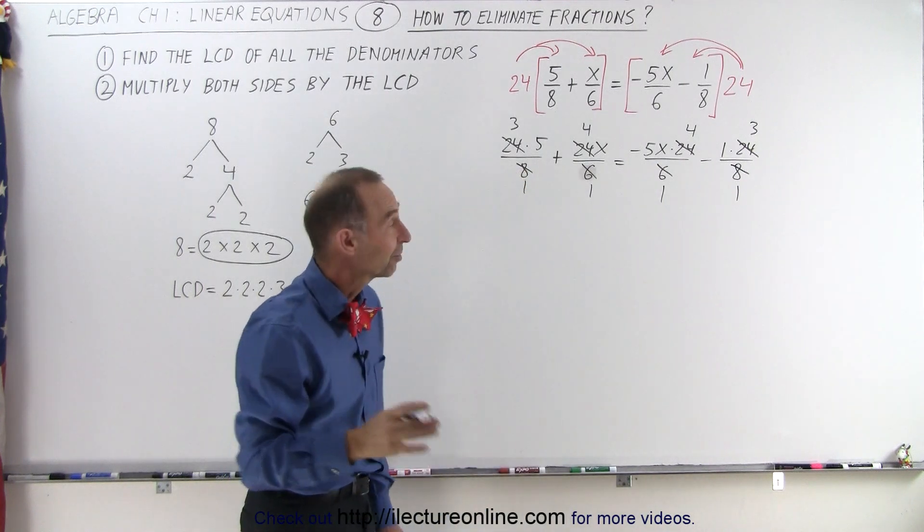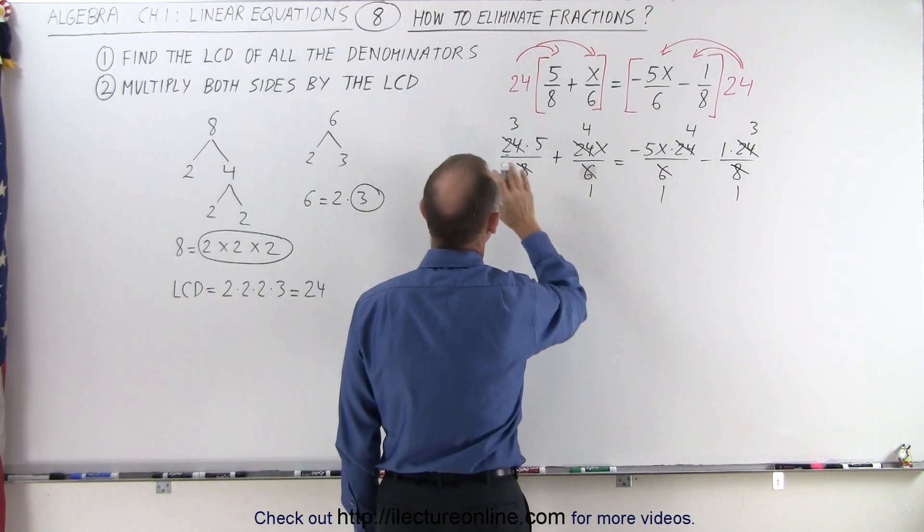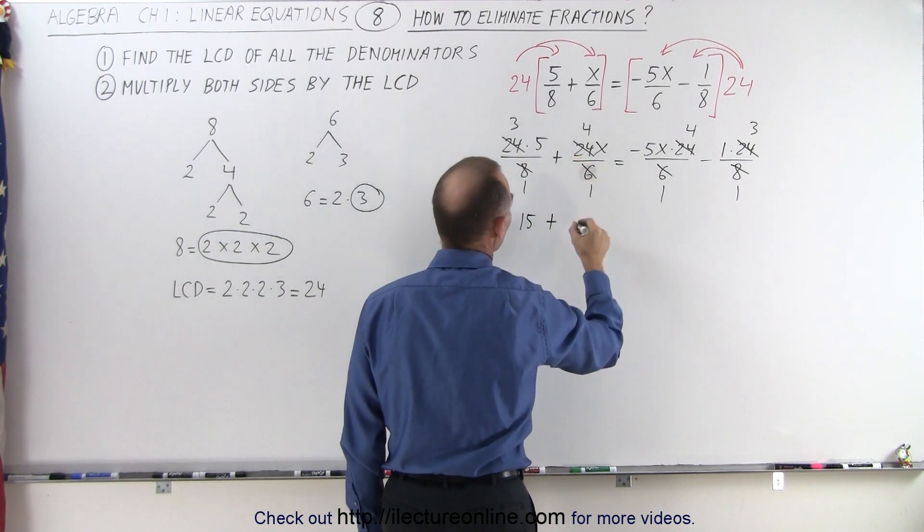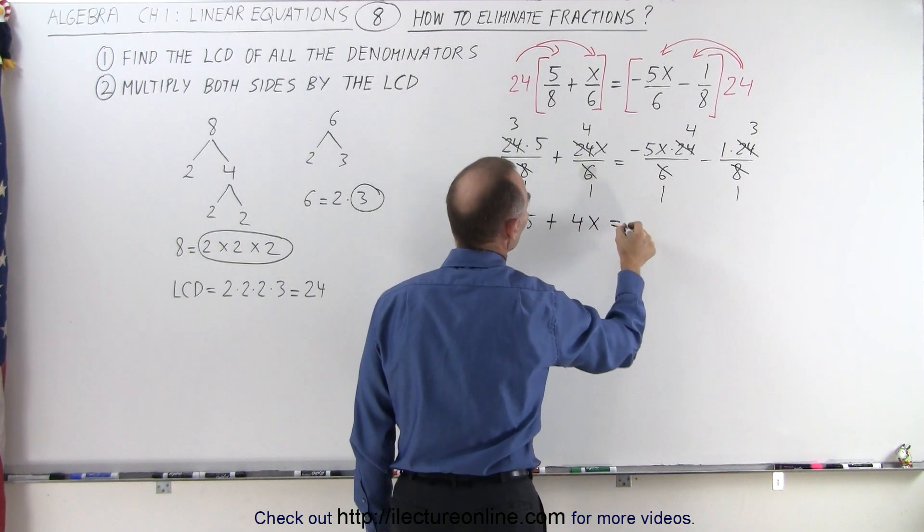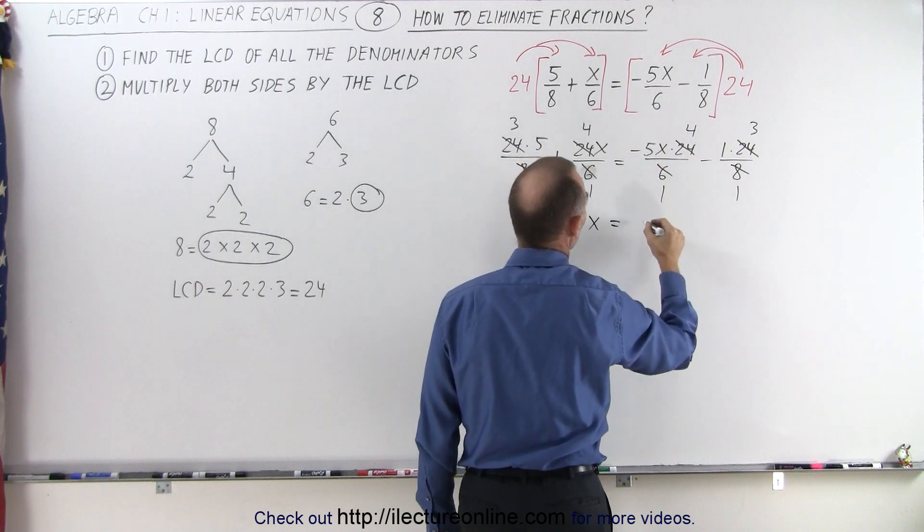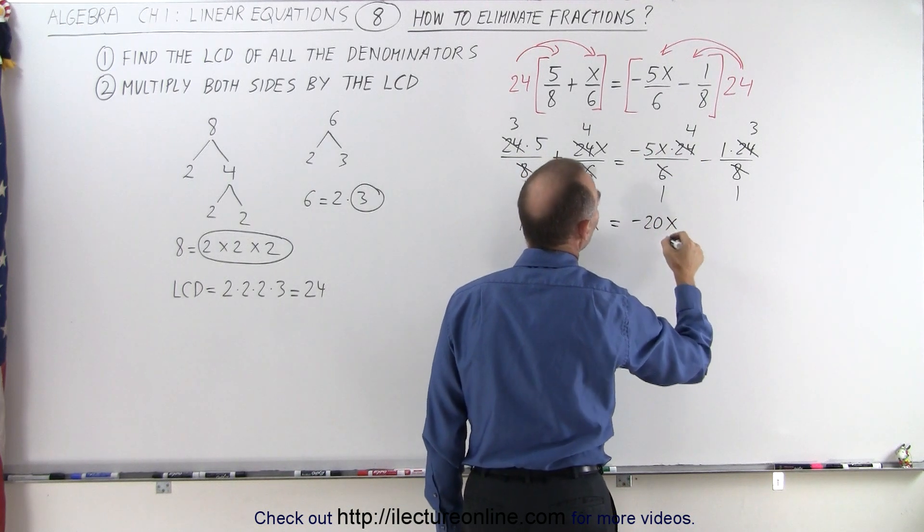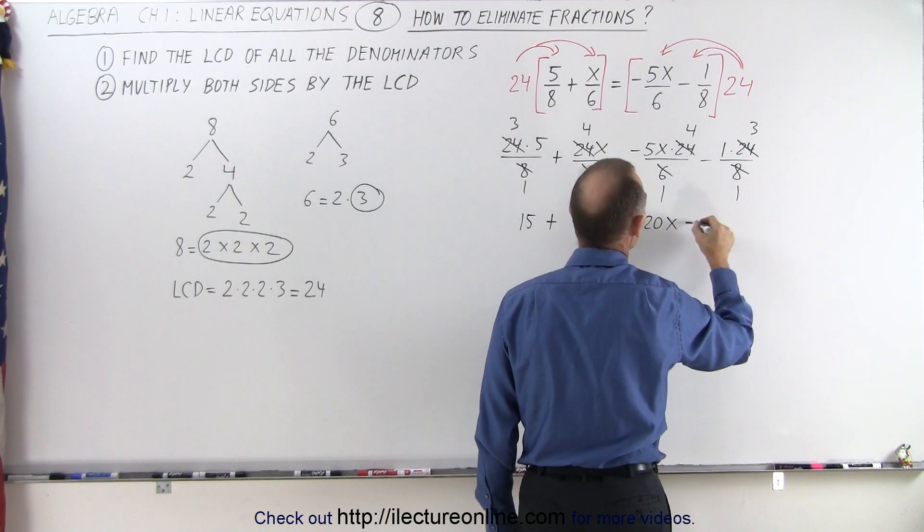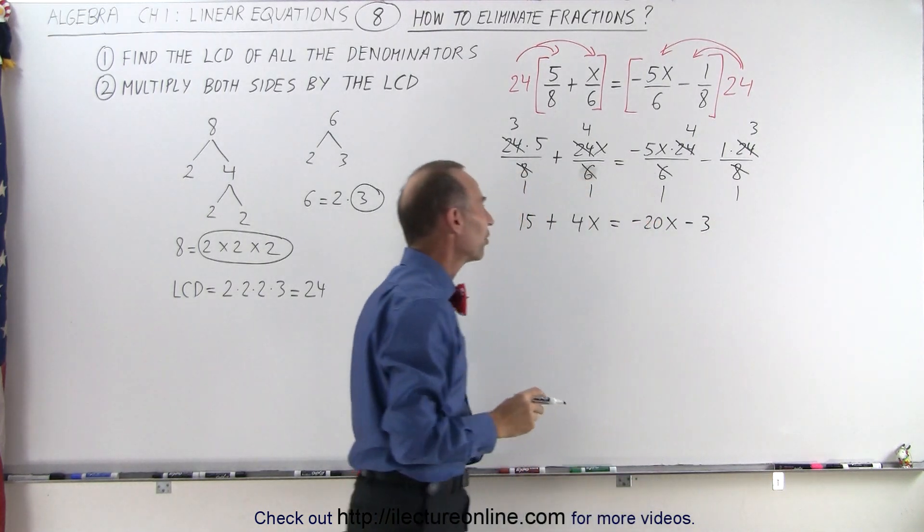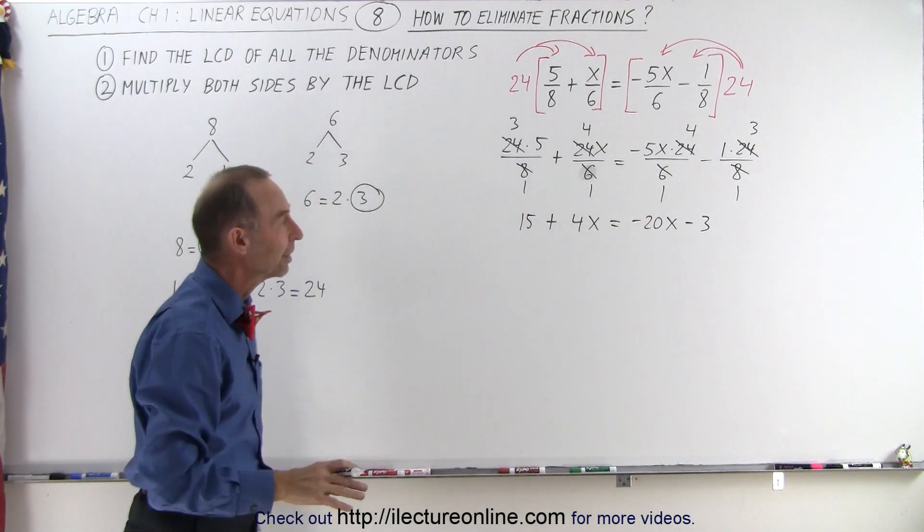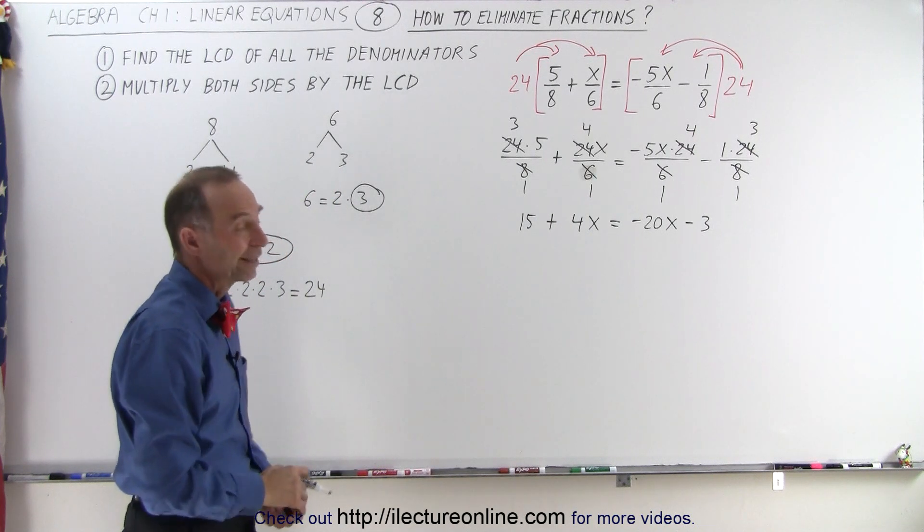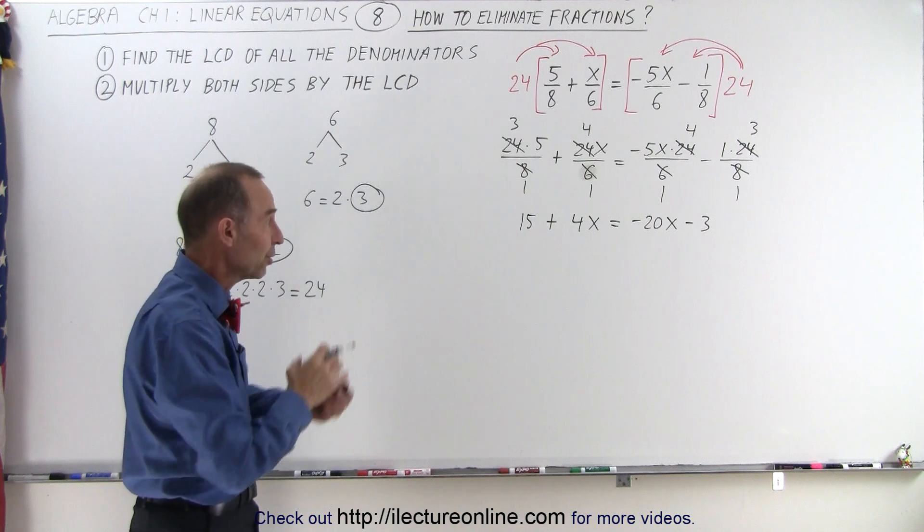Now let's simplify that. We end up with 3 times 5, which is 15, plus 4 times x, which is 4x, equals minus 5x times 4, which is minus 20x, and minus 3. You can see that we have now eliminated the fractions on both sides of the equation. At that point, we can continue with the problem.